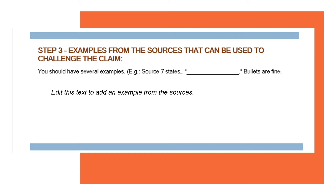For Step 3, it's the same concept, only you're giving me sources and examples from the sources that challenge the claim — that do not support the claim. Something that would be used to argue against the claim. And again, you cannot simply say 'Source 6 and Source 4.' You need to tell me a source and give me an example. You can use a direct quote or explain how it challenges the initial claim, which is: is spatial reorganization usually a result of migration?